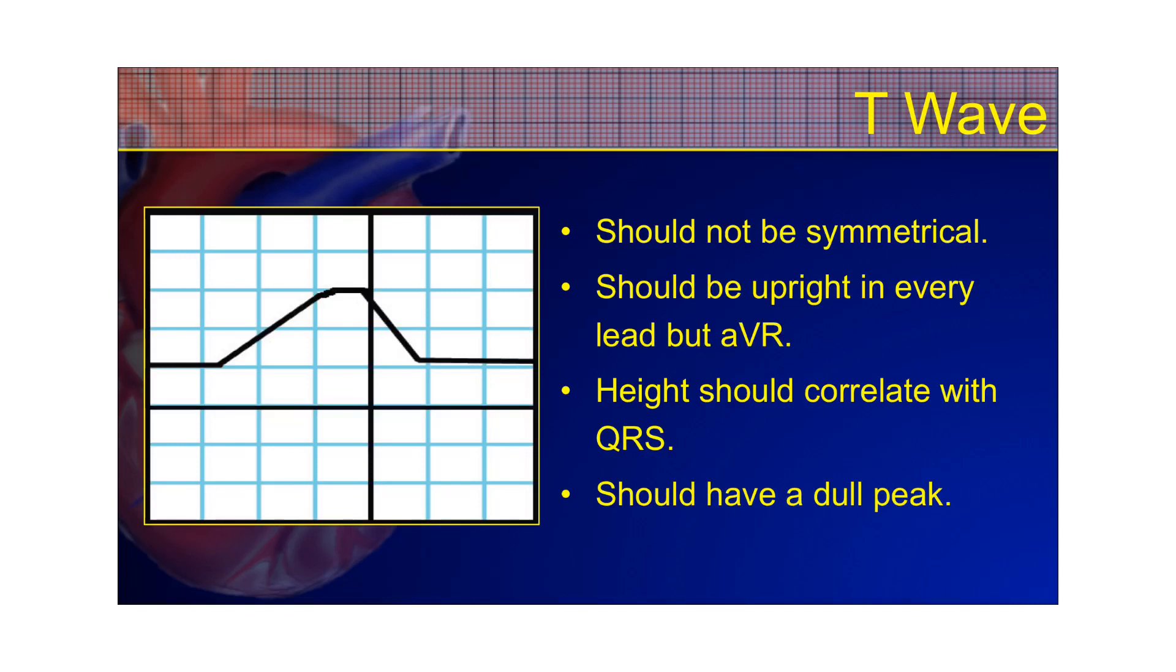You've got to start with a normal T-wave. A normal T-wave should not be symmetrical. Which means if you drew a line down the middle of it from the peak, it shouldn't be the same on both sides. This side, let's call that side A, should not be exactly the same as side B. It should not be a mirrored image or symmetrical.